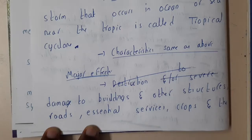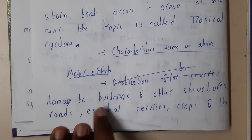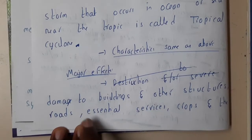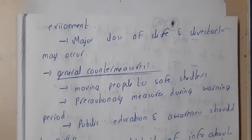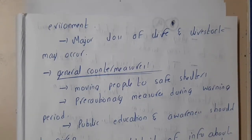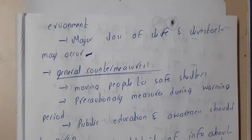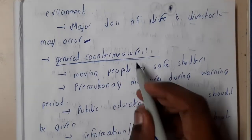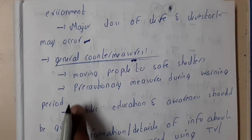Now let us discuss the major effects. Cyclones are devastating — they can destroy anything. Damage to buildings and other structures, roads, essential services, and crops are major effects. There is also a major loss of life and livestock — livestock meaning animals — causing huge issues.